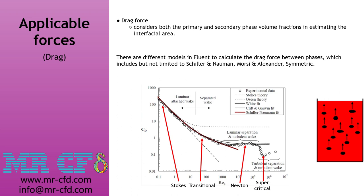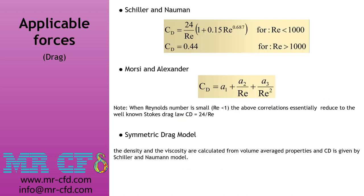There are different models in Fluent to calculate the drag force between phases, including Schiller-Nauman, Morsi and Alexander, and symmetric. The Schiller-Nauman correlation is defined for two different Reynolds number ranges. The Morsi and Alexander model reduces to Stokes' drag law when the Reynolds number is less than unity. The symmetric drag model calculates density and viscosity from volume-averaged properties, with Cd given by the Schiller-Nauman model. These are only some of the available drag models — more information is available on the ANSYS Fluent online help webpage.